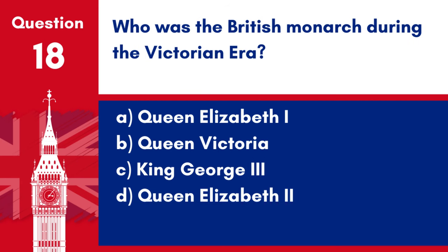Question 18. Who was the British monarch during the Victorian era? a. Queen Elizabeth I. b. Queen Victoria. c. King George III. d. Queen Elizabeth II. Answer: b. Queen Victoria. Queen Victoria was the British monarch during the Victorian era.